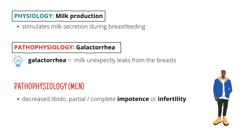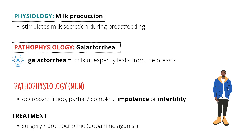How should we treat a person that has a prolactinoma? Usually it's either surgery, when we remove the tumor, or you can treat the patient with bromocriptine, which is a dopamine agonist. Why a dopamine agonist? Because dopamine is prolactin's most important inhibitory factor. So when you give dopamine, you inhibit prolactin secretion — and that's exactly what we want.